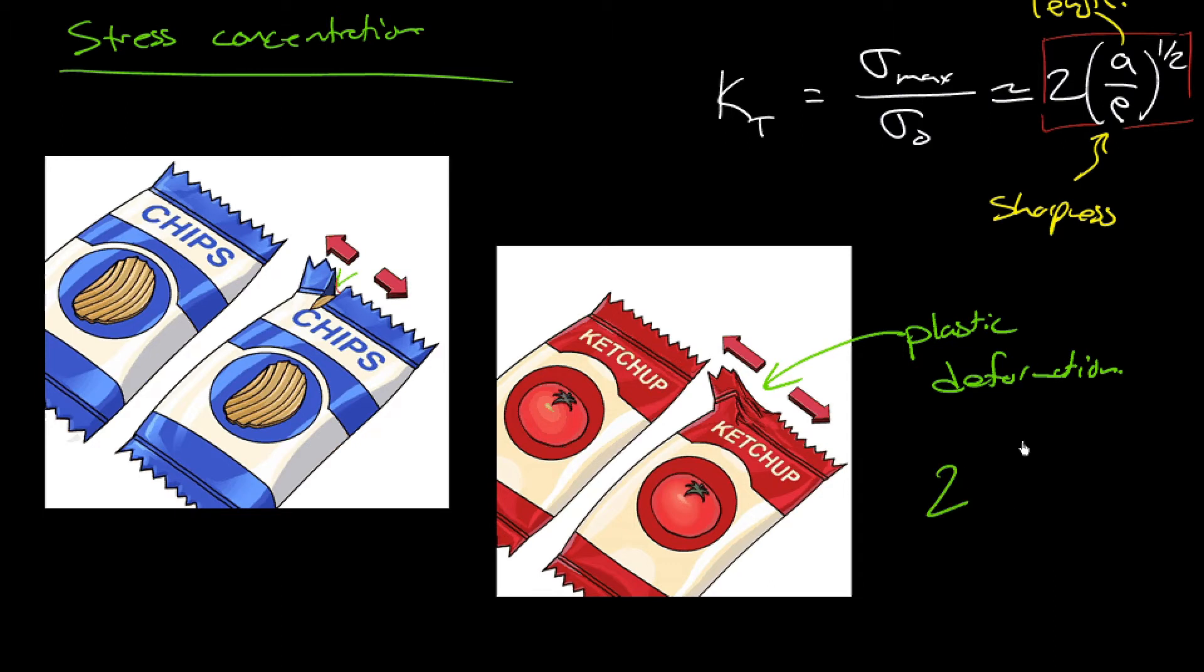Remember our stress concentration factor is roughly a over rho to the one half, or twice that. So if we increase the radius of curvature, we decrease our stress concentration factor. That is, the stress experienced at the tip of the crack is diminished. And so it's very difficult. We have to pull really, really hard to stretch that pack of ketchup.